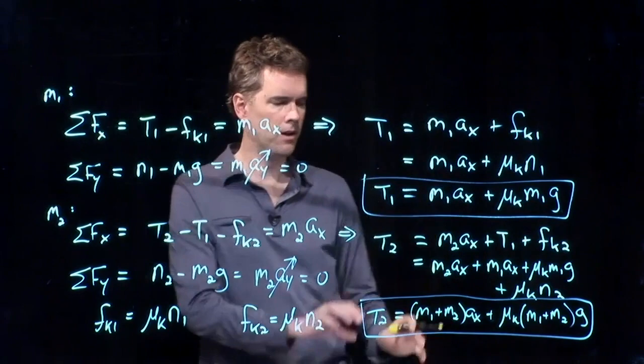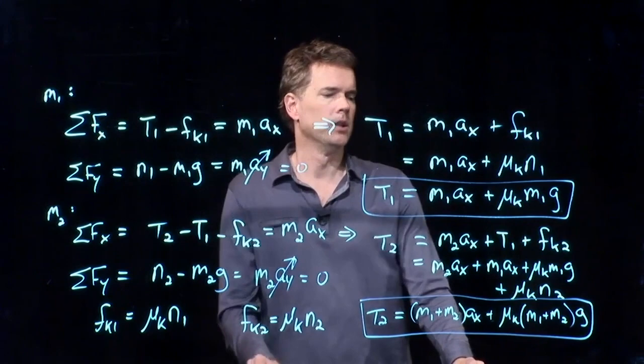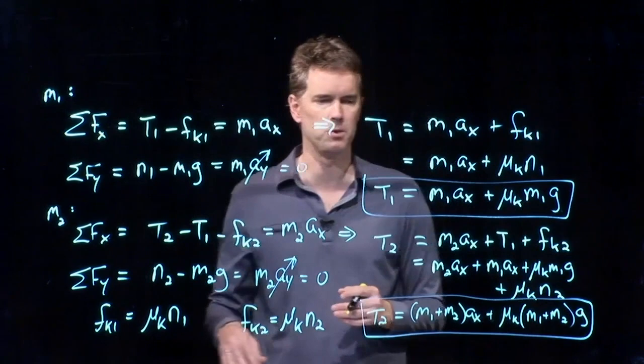So I can combine some stuff here, right? I've got M1 plus M2 A sub x plus mu K times M1 plus M2 times G. That's my tension T1. That's my tension T2. Now, you might be given some of these numbers, and so you can manipulate these equations and calculate what you want.